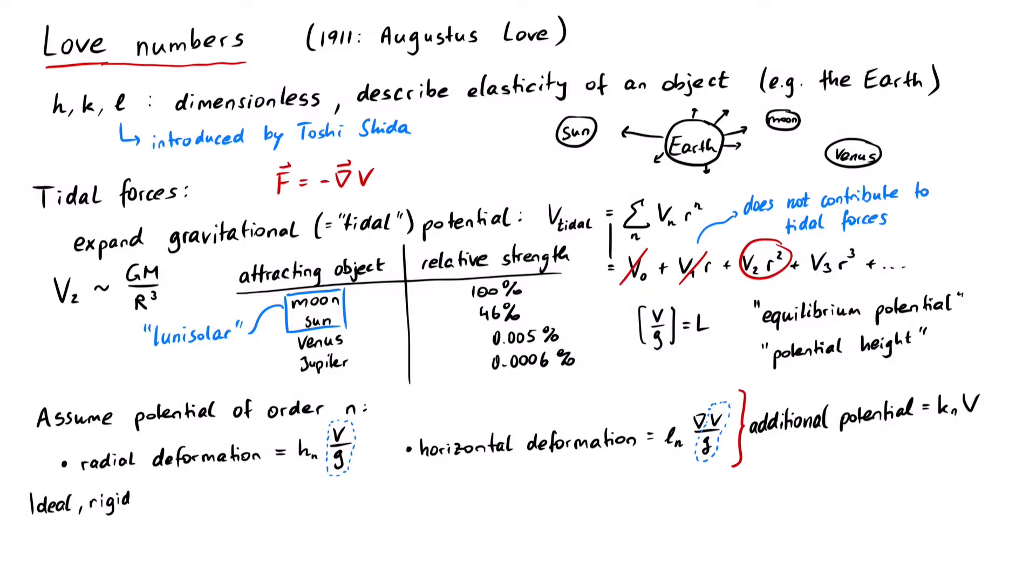For a perfectly solid, rigid earth, all love numbers would be zero. However, since our planet can and does undergo deformations, the love numbers have finite values. If we assume that a quadratic tidal potential is a good enough approximation,